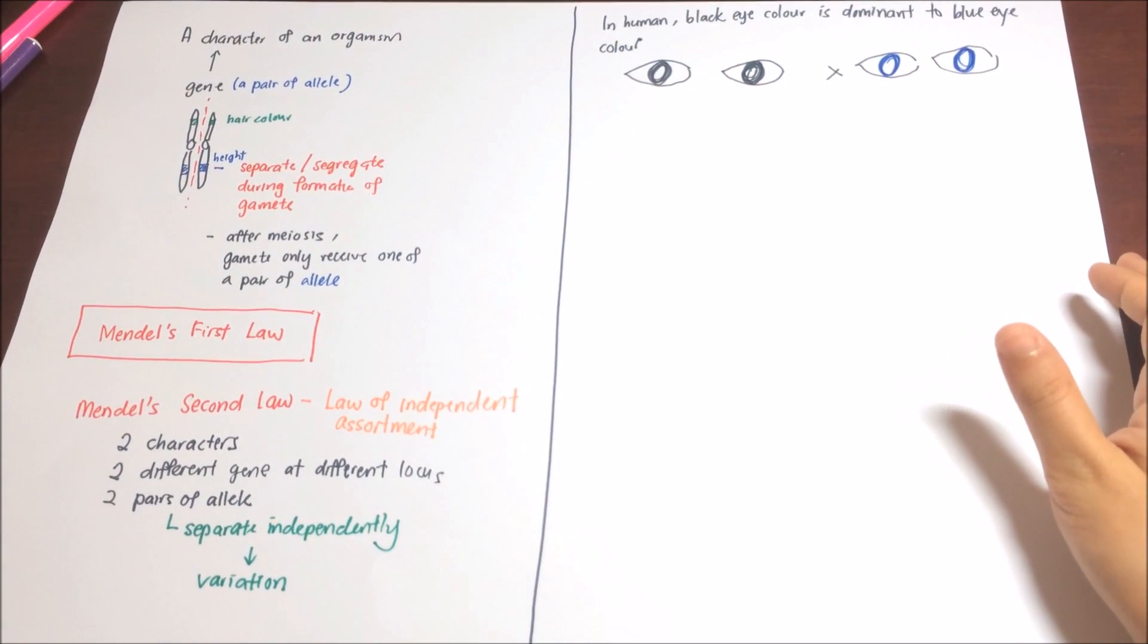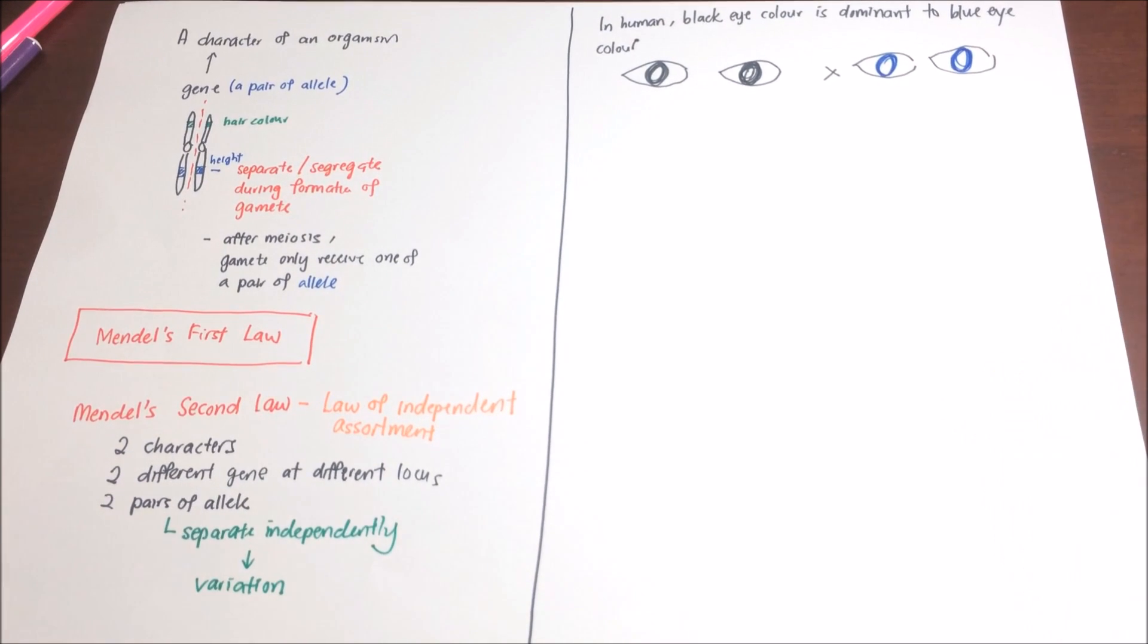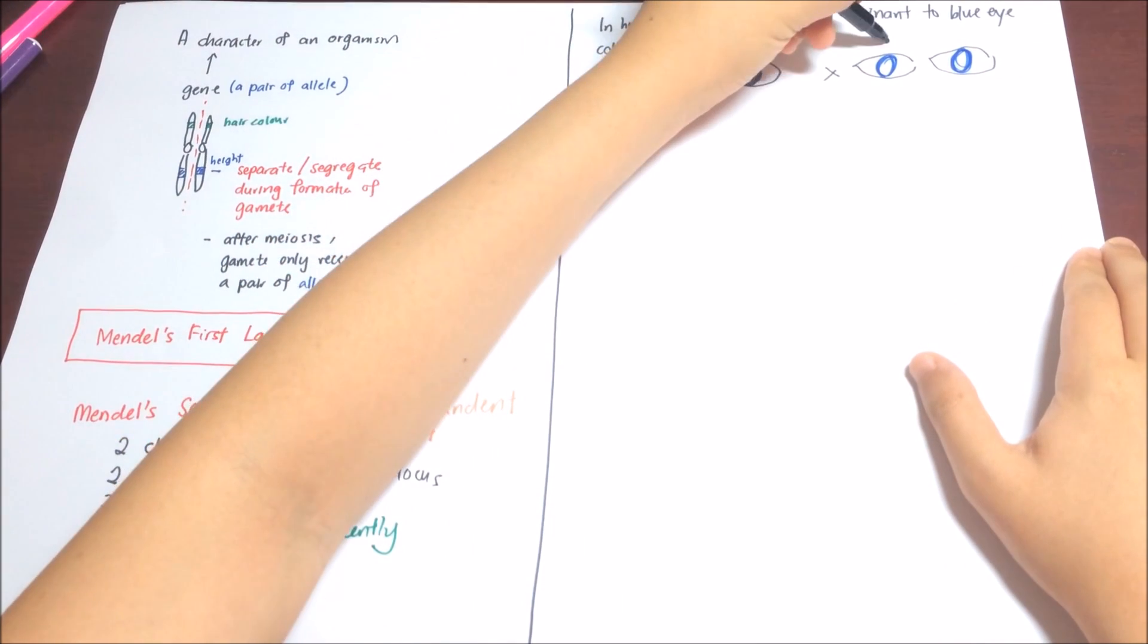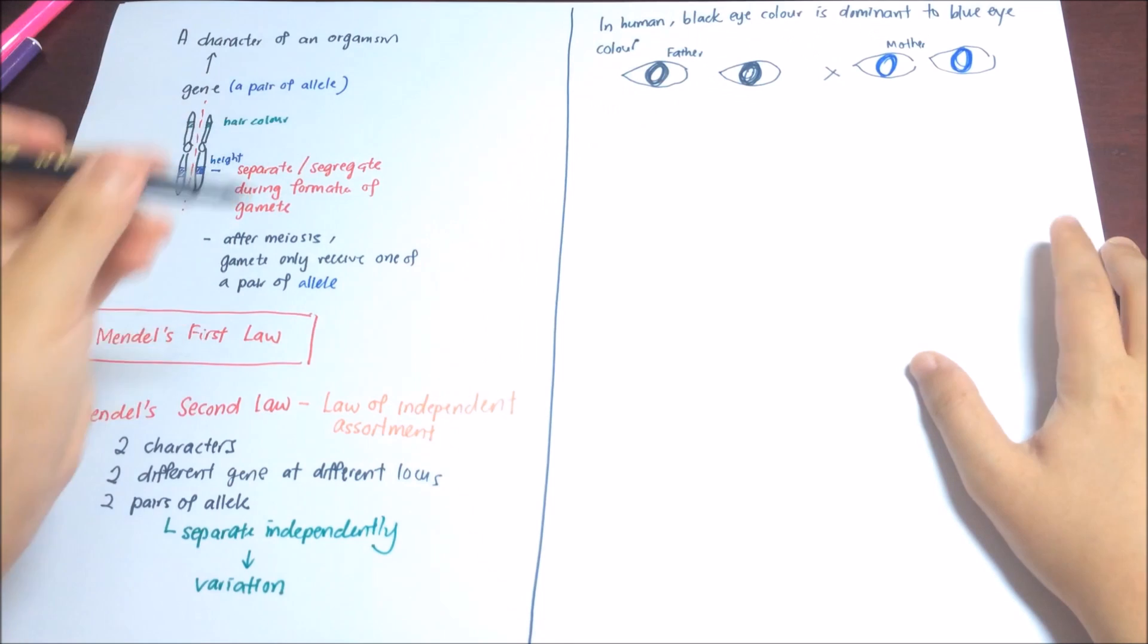The question that we are asking is, what are the genotypes and phenotypes of their children? Before that, we need to know what is the genotype of the parents.